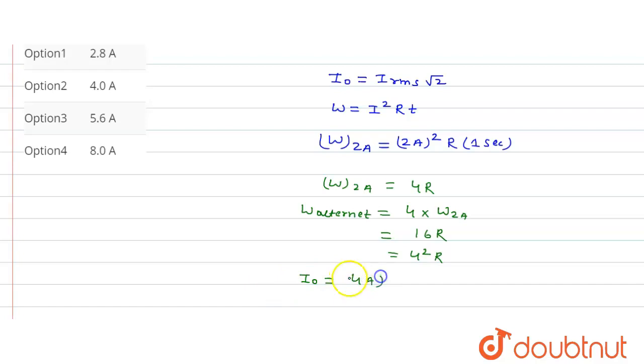I_rms value is 4 ampere times root 2, which equals 5.6 ampere for the I₀ value.